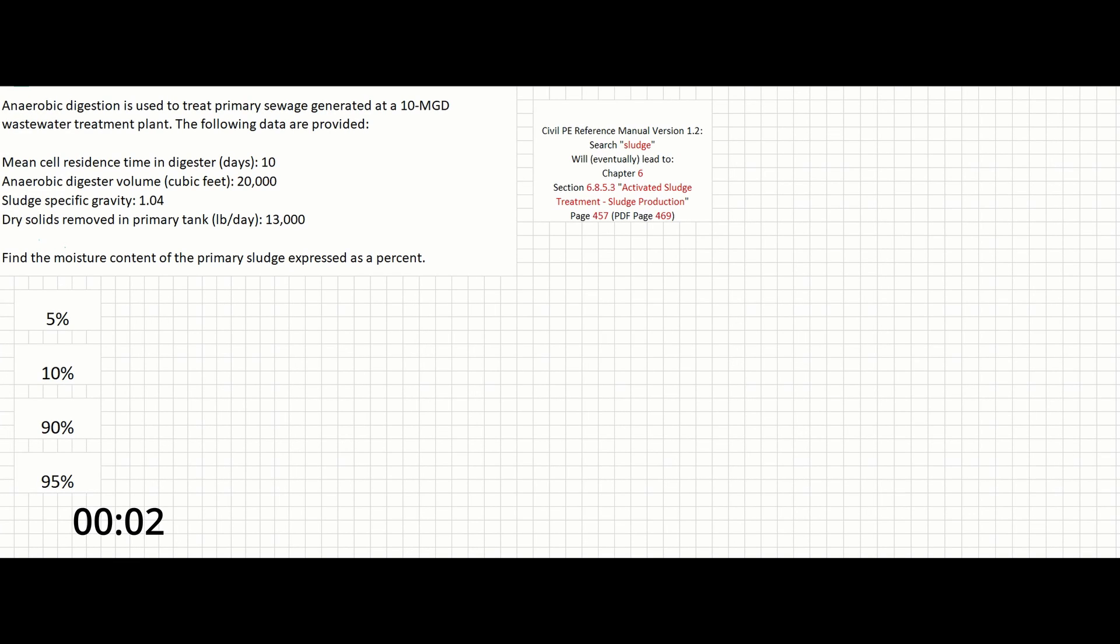In this problem, anaerobic digestion is used to treat primary sewage generated at a 10-MGD wastewater treatment plant. The following data are provided.